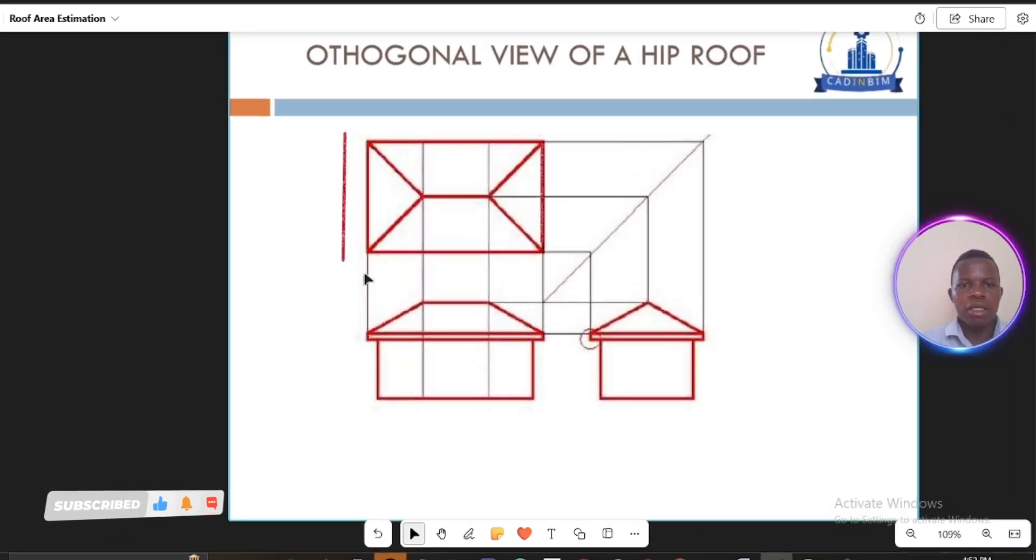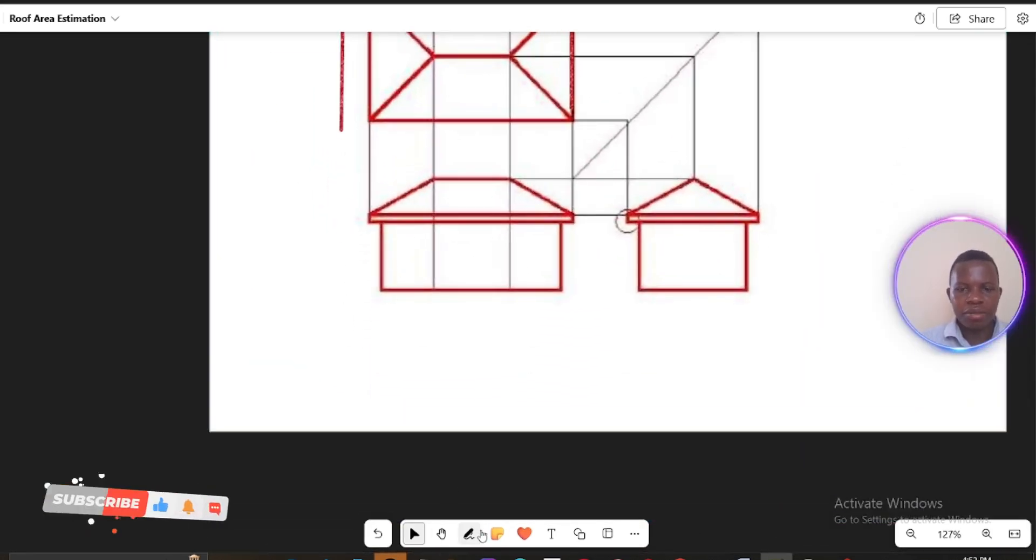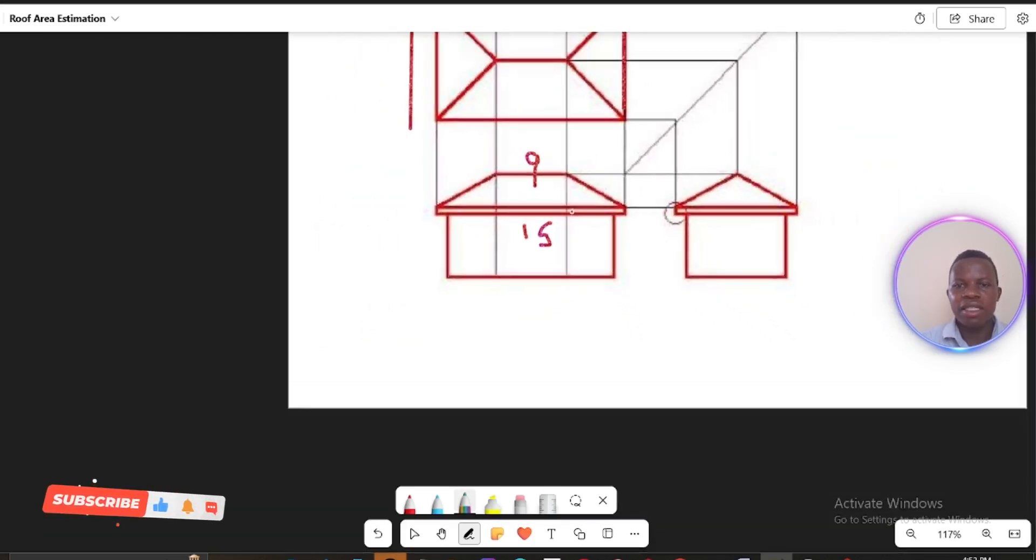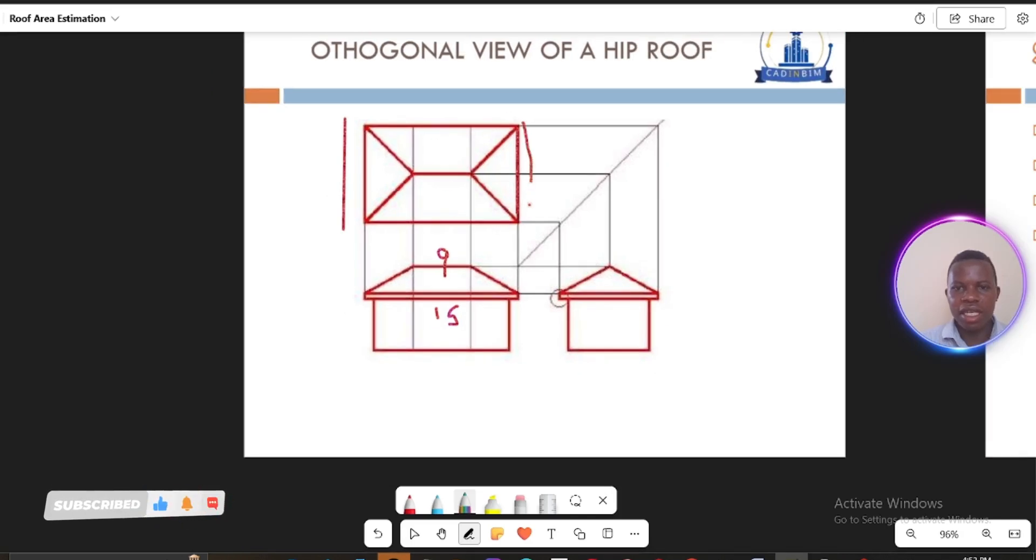Remember that so far we have this one as 15 as given, and then we have this one as 9. And then we also have this one, based on this roof, we also have this length here, the one which is down here, which is 6 meters.